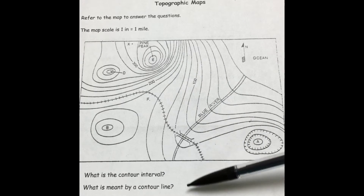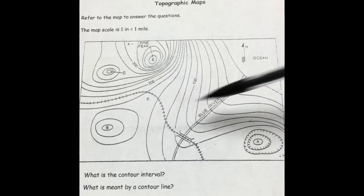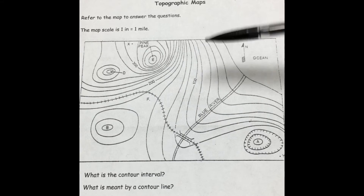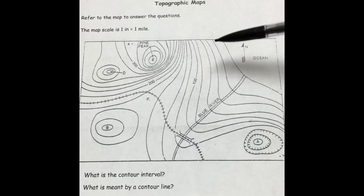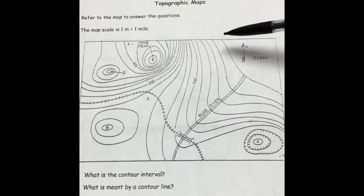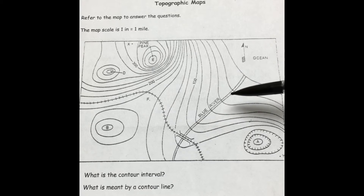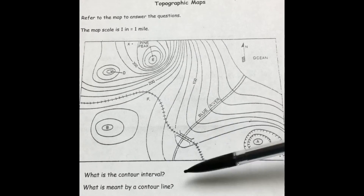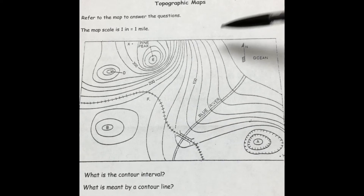The next question asks what is meant by a contour line. A contour line — you can see these lines all over the map — shows the elevation on the map. You can mark one of these as a contour line. There are also other features on the map, like a river, a bridge, and railroad tracks, but the contour lines specifically are the lines that show the elevation.